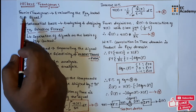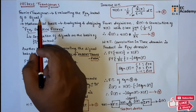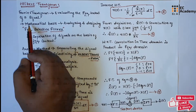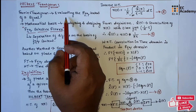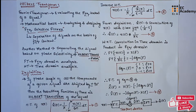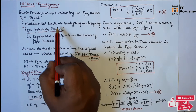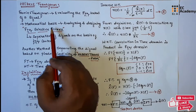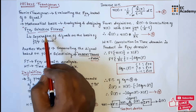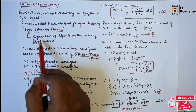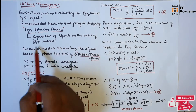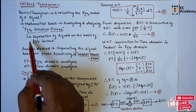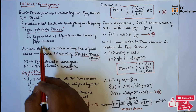Before going to Hilbert transform, first let us understand what is Fourier transform. Fourier transform is practically useful for evaluating the frequency content of a signal, and it is the mathematical basis for analyzing and designing frequency selective filters. These frequency selective filters are used for separation of signals on the basis of frequency content.